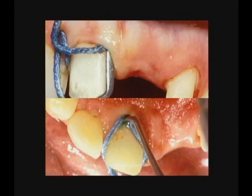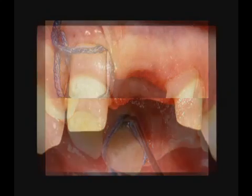Once we've prepared the facial cervical limitations, at that point, if you prefer, you can use retraction cord around the remaining part of the tooth and now place it on the facial.